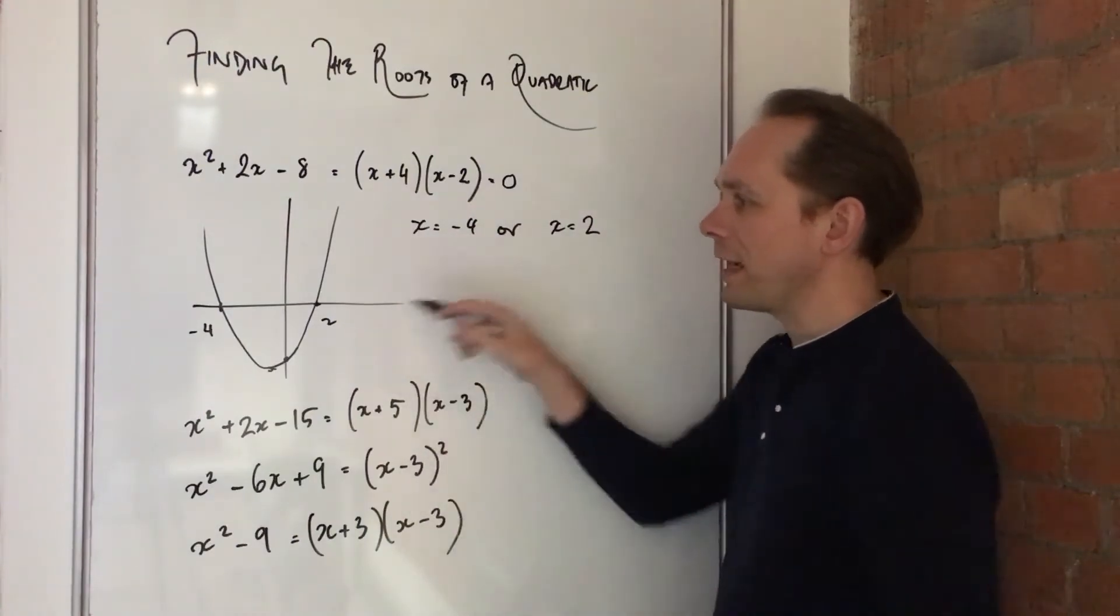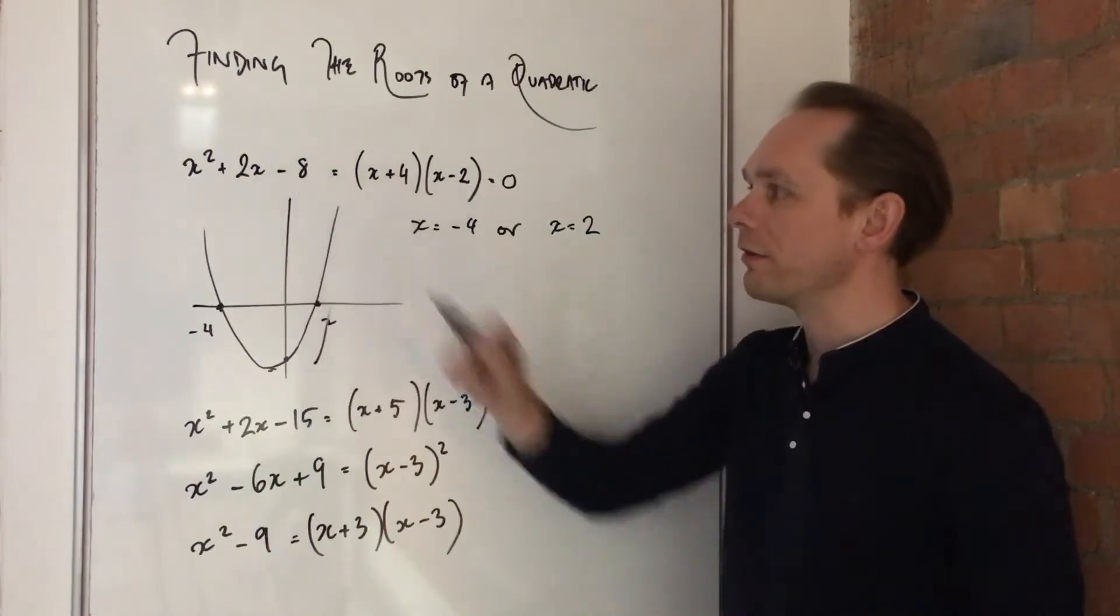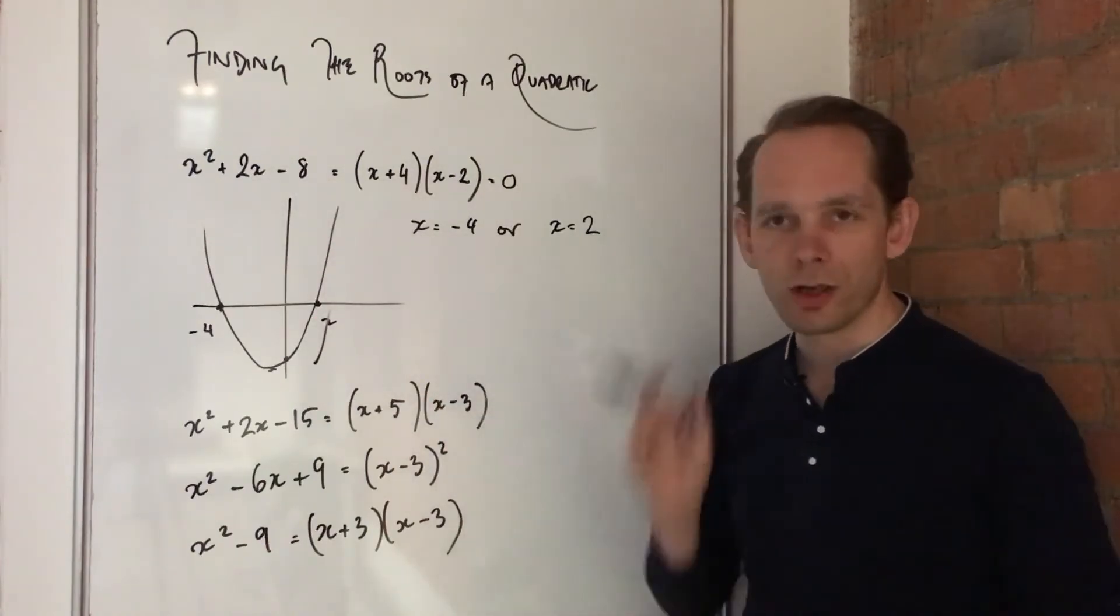Now, those are our roots. And in fact, on the graph, you can see there, minus 4 or 2. And that's the graph of this equation. Whoops, just made a mark for no reason.